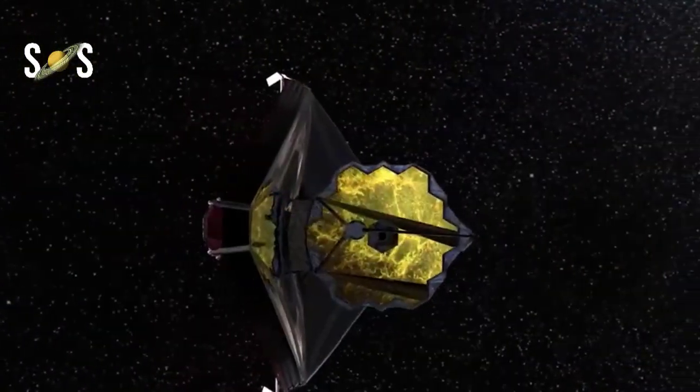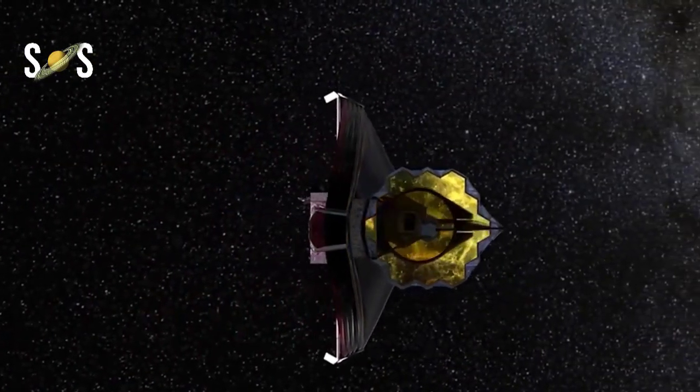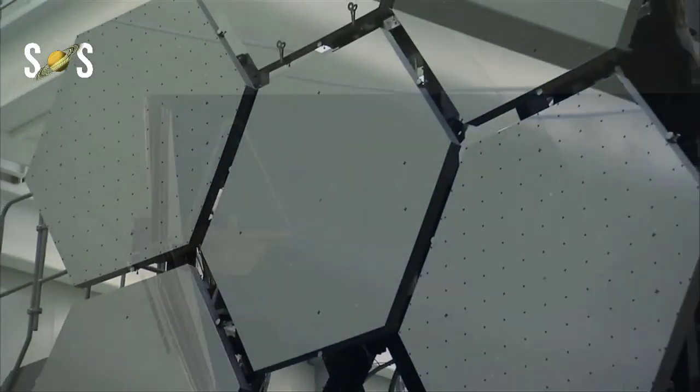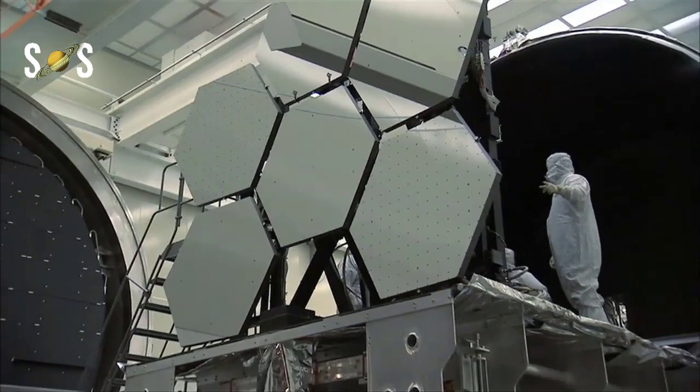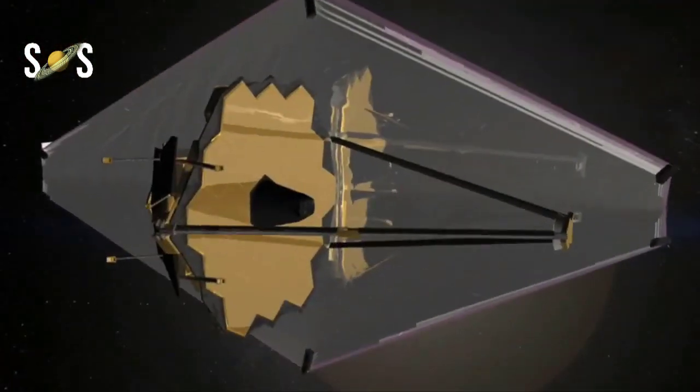How far back will Webb see? Webb will be able to see what the universe looked like around a quarter of a billion years, possibly back to 100 million years after the Big Bang, when the first stars and galaxies started to form.